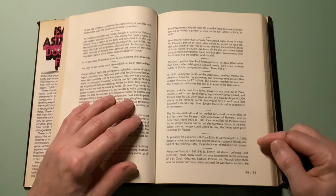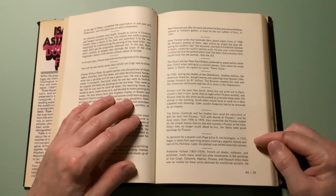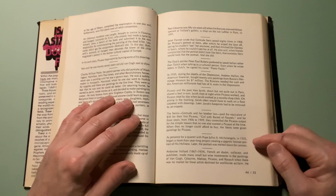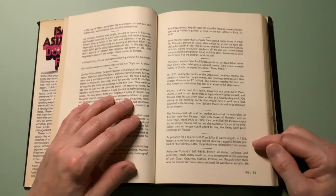As penance for a quarrel with Pope Julius II, Michelangelo in 1505 began a more than year-long project creating a gigantic bronze portrait of his holiness. Later, the portrait was melted down for cannon.